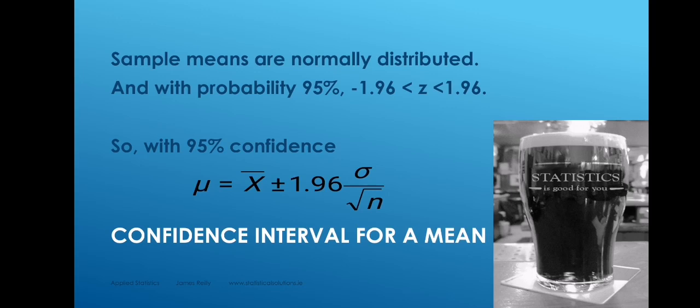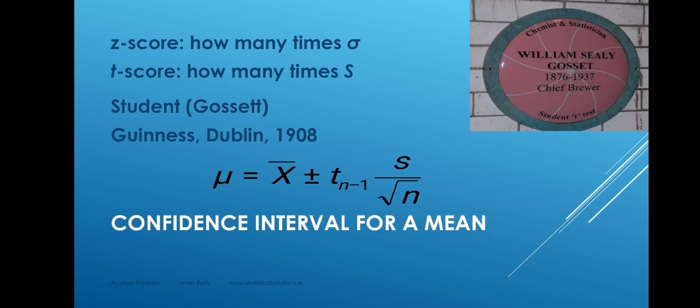We need some smart person to give us a way to replace this formula with one that uses s rather than sigma. And where are we going to find that smart person? In Dublin, Ireland — in Guinness's brewery in particular. Welcome to the Guinness Storehouse. There's a plaque on the wall there to William Seeley Gossett, who was a brewer and statistician. He wrote under the pen name Student and provided the answer to this problem.